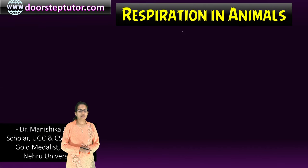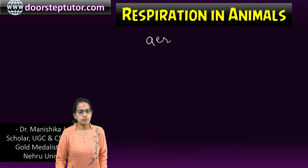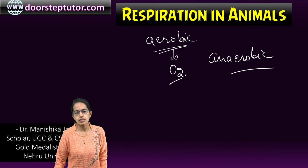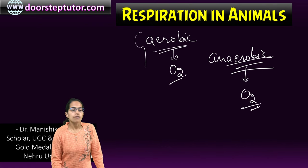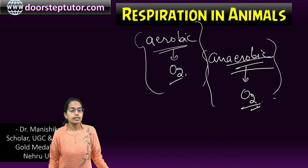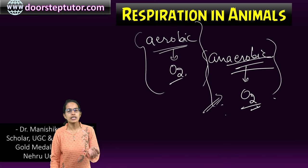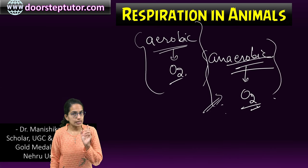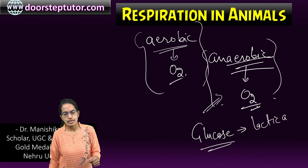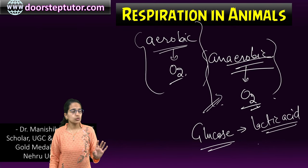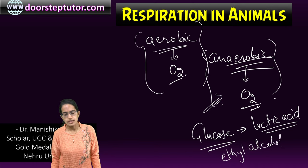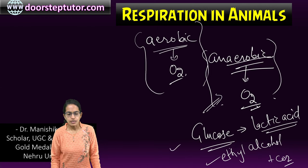In this class we will talk about respiration in animals. As understood in our previous class, there are two types of respiration: aerobic and anaerobic. Aerobic occurs in the presence of oxygen; anaerobic occurs in the absence of oxygen. In human beings and higher organisms, aerobic respiration is present. In bacteria and fungi, anaerobic respiration is present. When anaerobic respiration occurs in humans or plants, glucose does not break down properly. In humans it breaks down into lactic acid with no release of carbon dioxide, whereas in plants it breaks down into ethyl alcohol along with release of carbon dioxide.